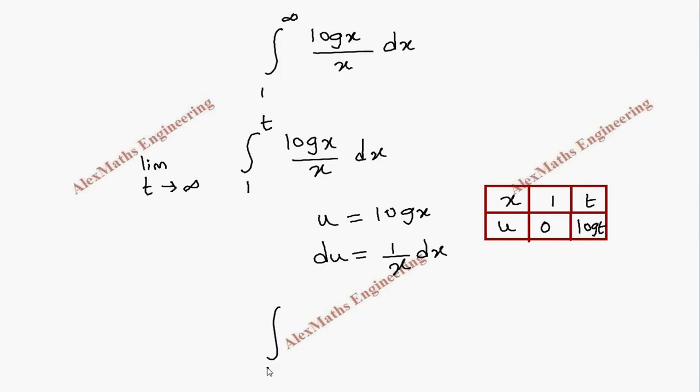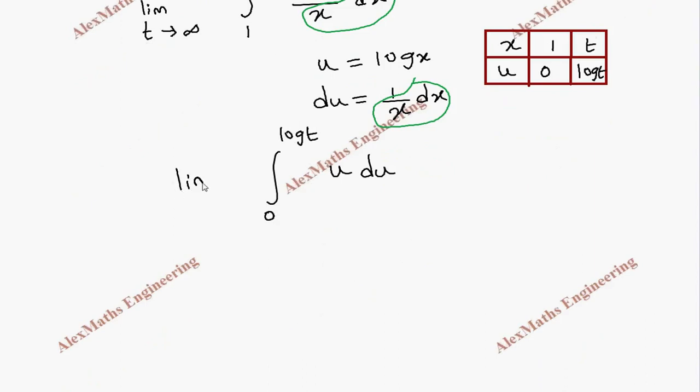So our new limit is from 0 to log t, and log x is u, and this remaining dx by x which we have here, dx by x, can be replaced as du, and still we have limit t tends to infinity.